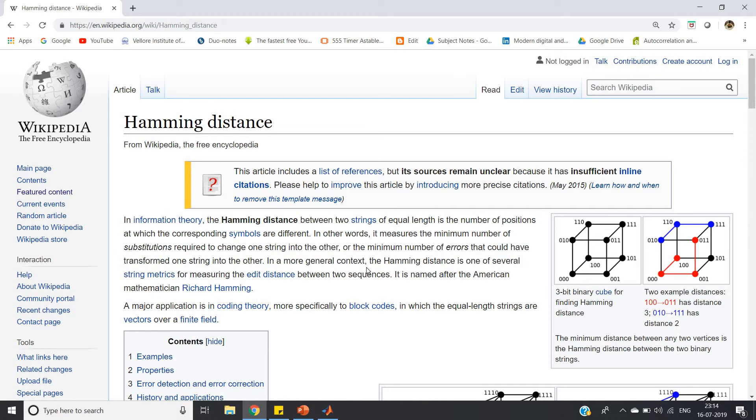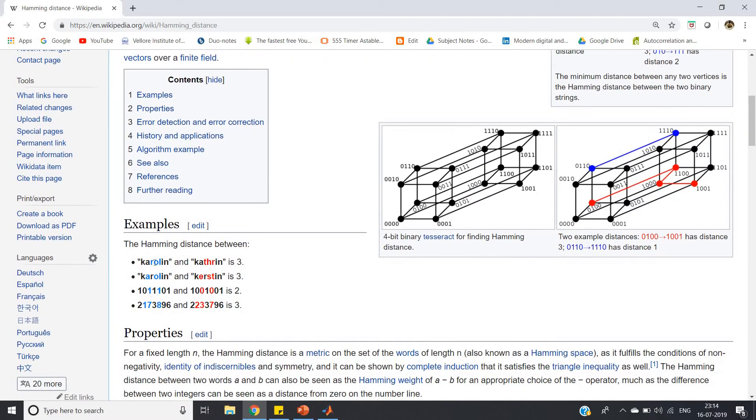For example, you can take one string as Caroline (K-A-R-O-L-I-N) and another one is Katherine (K-A-T-H-R-I-N). See, first two symbols or first two characters K-A is common in both strings, but the next three R-O-L is there in Caroline but in Katherine T-H-R is there, so three mismatch. In the last, I-N is matching in the two strings. So basically there are three mismatches in the two equal length strings, so the Hamming distance is three.